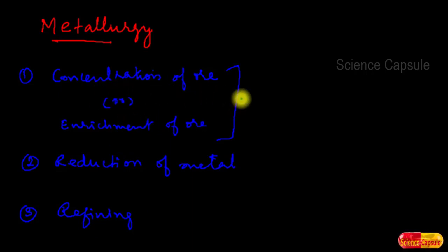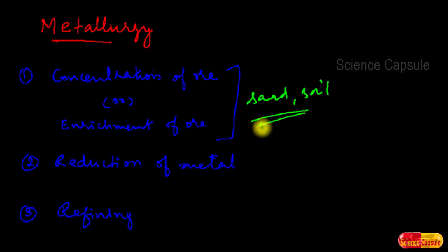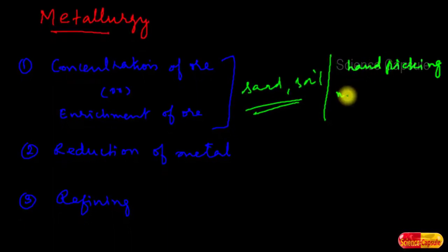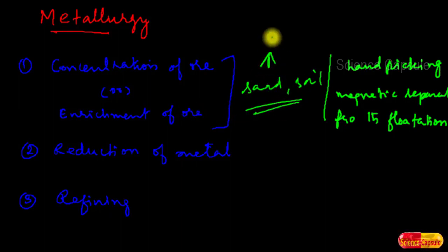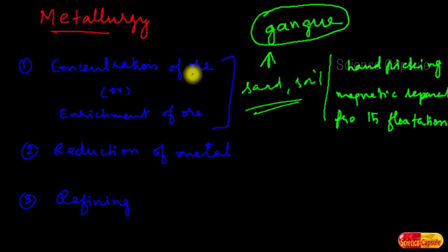In the first step — concentration of ore — impurities such as sand and soil need to be removed so that the ore gets concentrated. Various methods are used: hand picking removes larger impurities, magnetic separation is another method, and sulphide ores can be concentrated by the flotation process. These impurities are called gangue particles (G-A-N-G-U-E). The aim of concentration is to remove gangue particles using appropriate separation techniques depending on the type of ore.